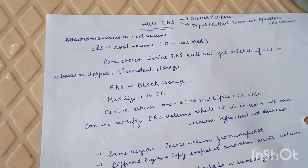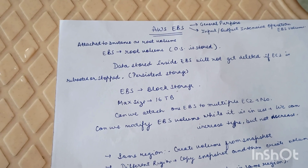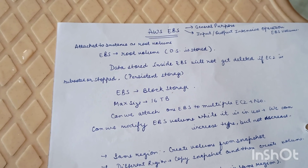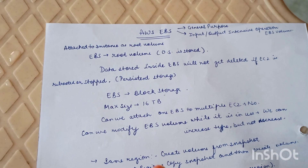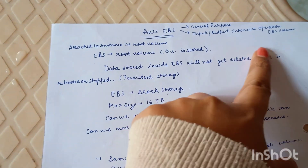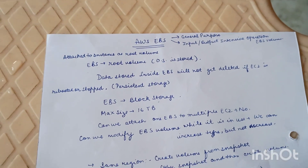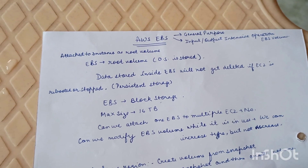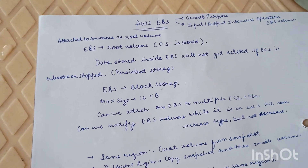Welcome to the video. Today we will discuss the EBS storage service in AWS. EBS stands for Elastic Block Storage, where data is stored in evenly sized blocks with indexing. EBS volumes are of two types: general purpose (gp2, gp3) and input/output intensive (io1, io2). We can choose the type according to our requirements.